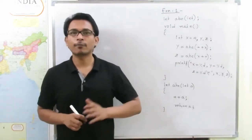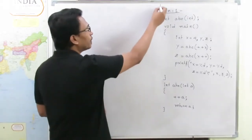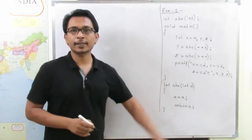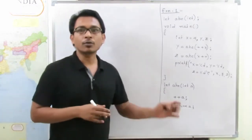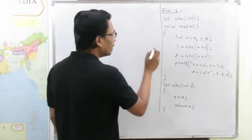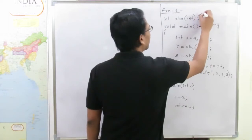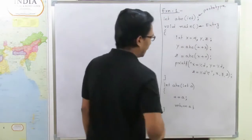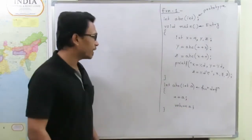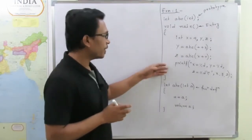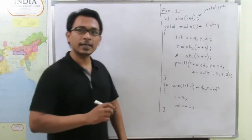Hello everyone, today we are going to solve a problem from user-defined functions. We need to find the output that this particular program will produce after execution. This is the entry point function (main), this is the prototype, and this is the function definition. This particular function is called twice in the main function — once here and again here.